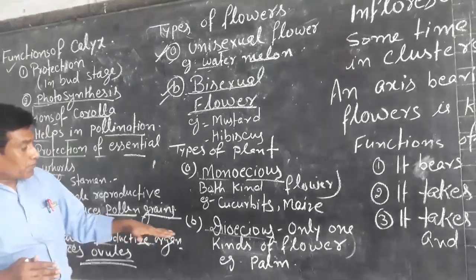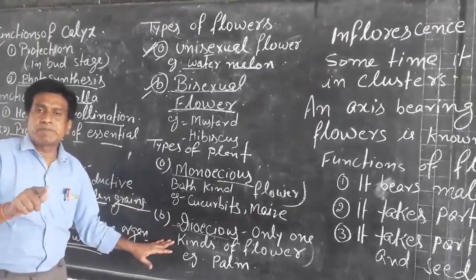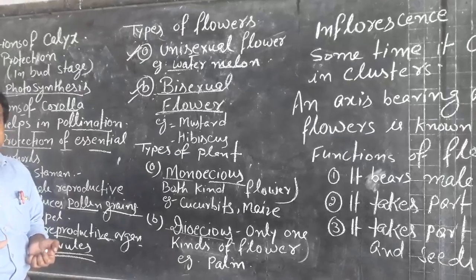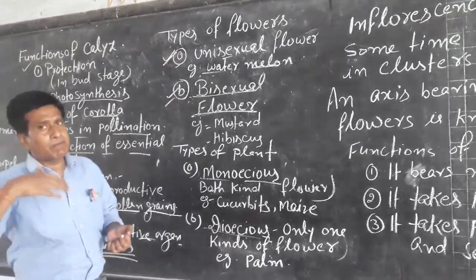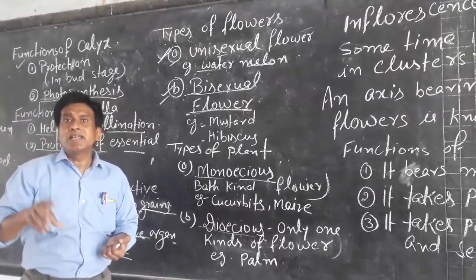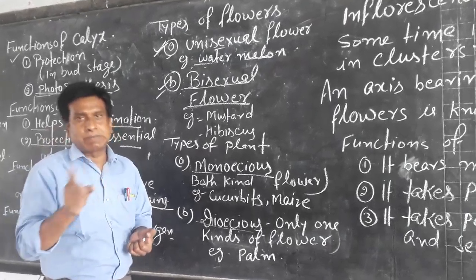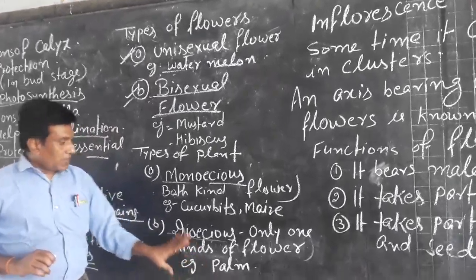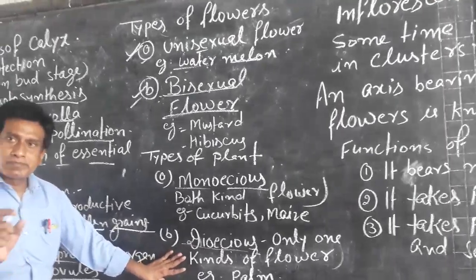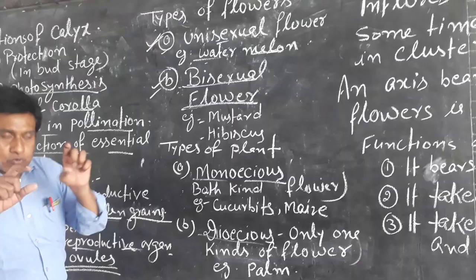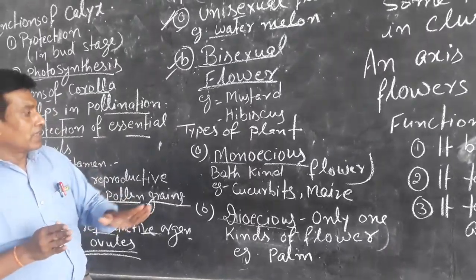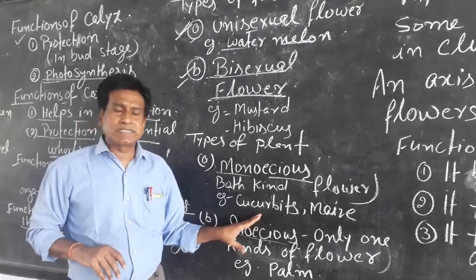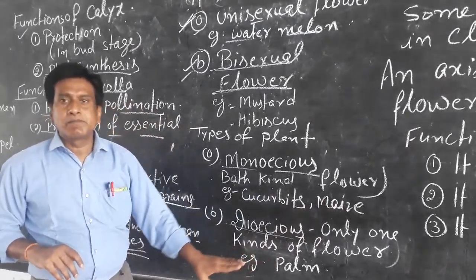A dioecious plant produces only one kind of flower — either male flower or female flower. If they produce male flowers, the plant is called a male plant; if they produce female flowers, the plant is called a female plant. Examples of dioecious plants are palm and papaya. Cucurbits are examples of monoecious plants.